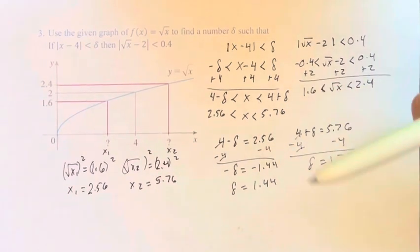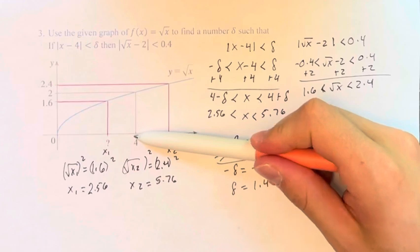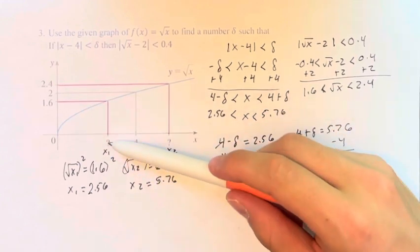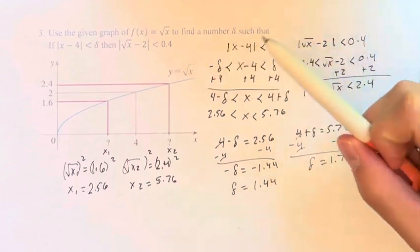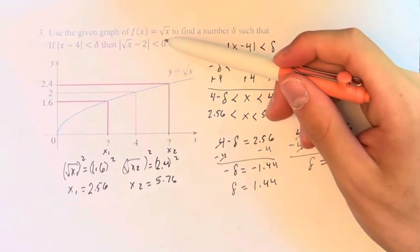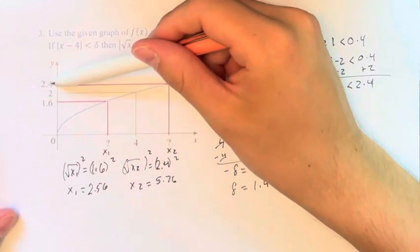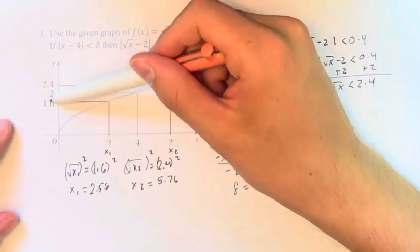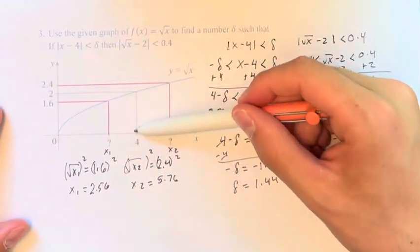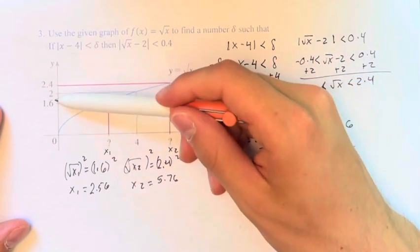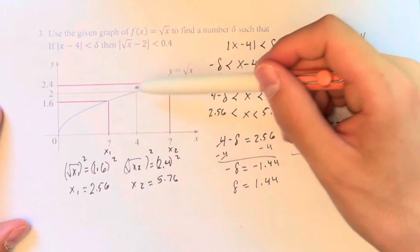So this is saying that if we go 1.44 to the left of 4, all the values in that range are going to be less than 0.4 away from 2. Right? They're going to stay within this range. Right? Go 1.44, all the points you're going to hit are less than 0.4 away when you plug them into the function.